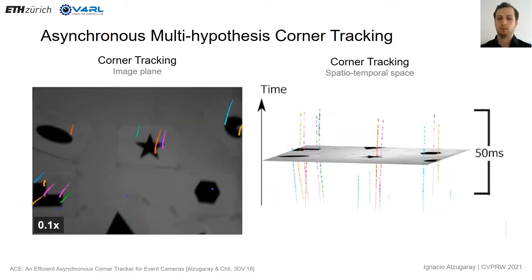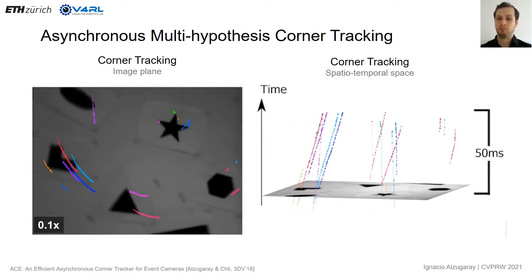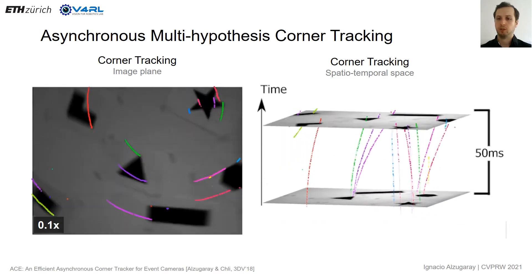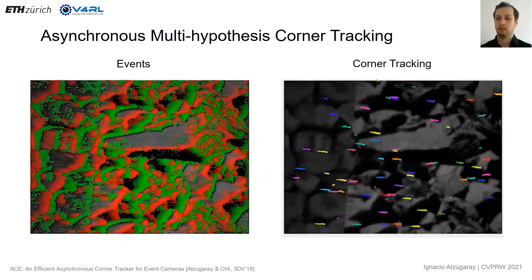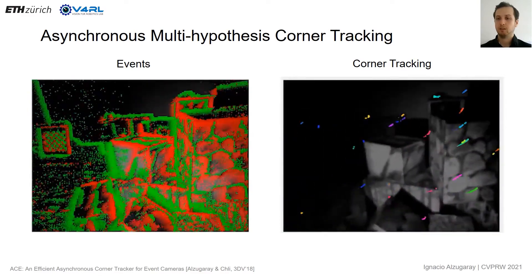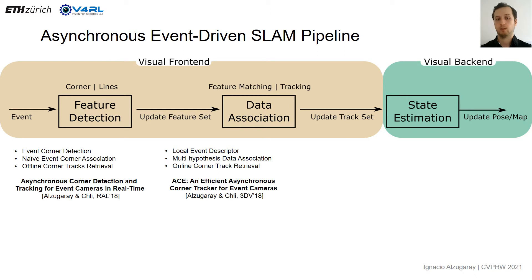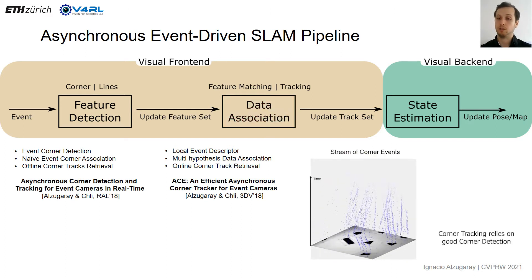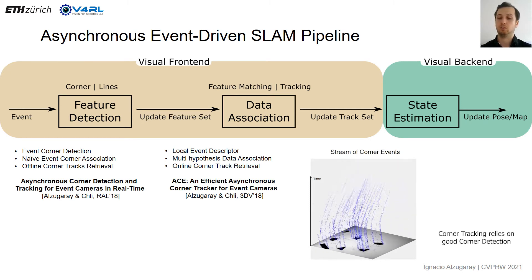This way, the full tree is created as shown in the middle, and on the right we can see that feature tracks get processed in an online, asynchronous, event-rate fashion into consistent feature tracks. This allows us to obtain way longer feature tracks compared to the previous method, and it performs really well — for instance, in HDR environments. To summarize: we proposed a lightweight local event descriptor, an improved multi-hypothesis data association, and we obtain feature tracks based on corners in an online fashion. The main limitation is that we link the tracker's performance to the detection performance, since we rely continuously on good corner detections.